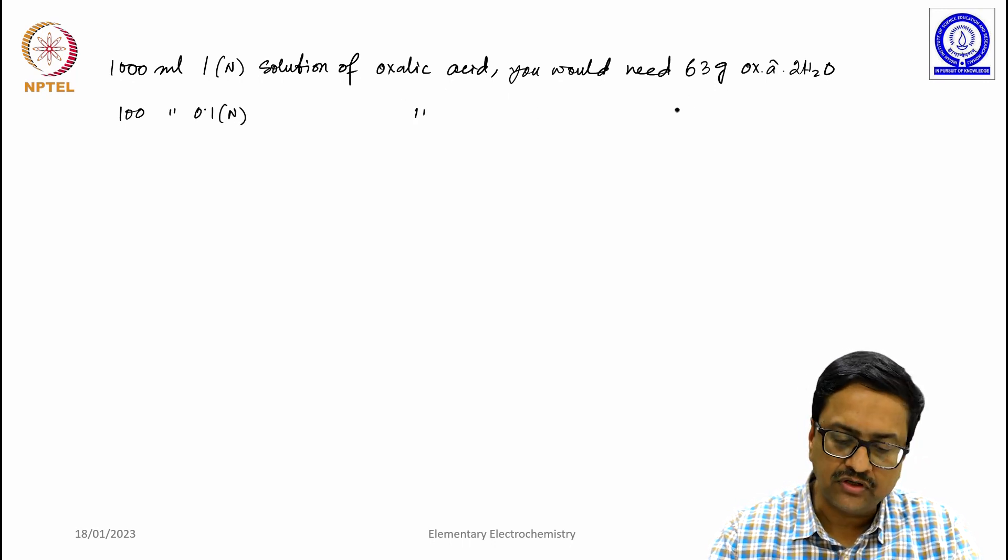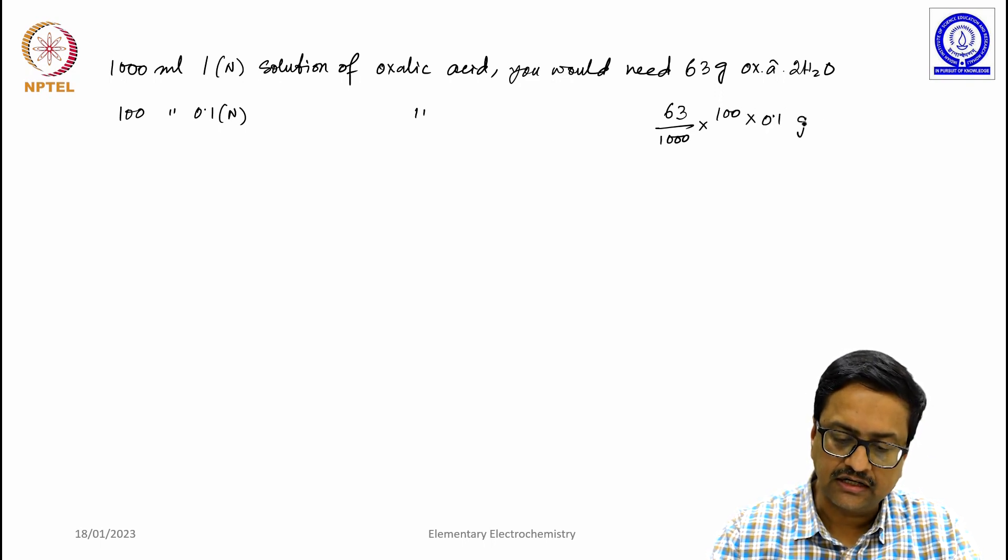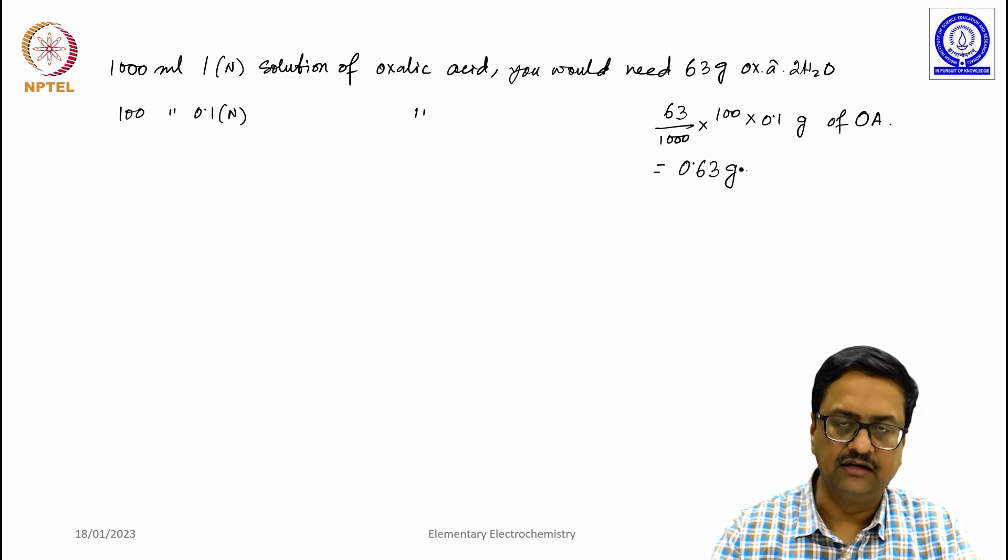So for that, we would need 63 by 1000 into 100 into 0.1 gram of oxalic acid dihydrate, which turns out to be 0.63 gram.